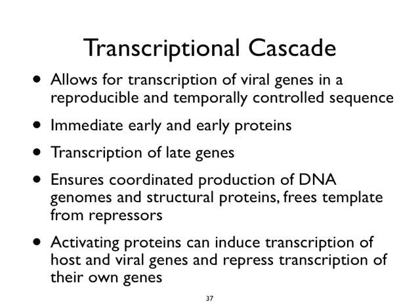This transcriptional cascade ensures coordinated production of DNA genomes and structural proteins so you can make infectious virus. What it also does is free templates from repressors — when you make lots of DNA molecules and have lots of genomes present in a cell, any host proteins there to repress the virus are now soaked up by all these genomes, freeing the virus promoters for transcription. And activating proteins can induce transcription of both host and viral genes, and sometimes repress transcription of their own genes.